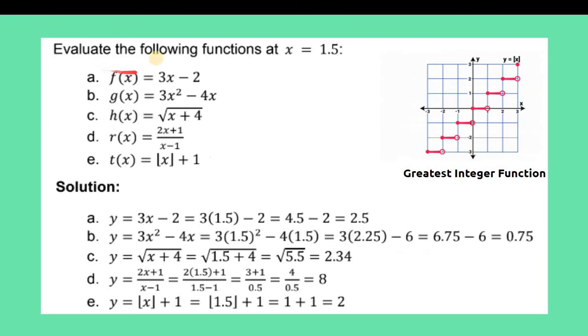Let's look at this. We have function f(x) equals 3x minus 2, and x equals 1.5. So f(x) equals 3x minus 2 equals 3 times 1.5 minus 2, equals 4.5 minus 2. Thus you have 2.5. So your answer for number 1 is 2.5.